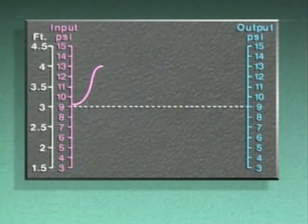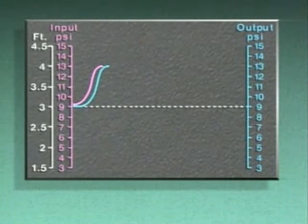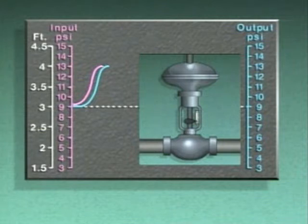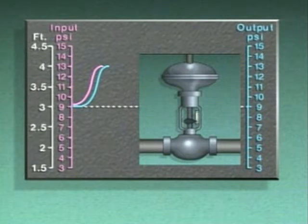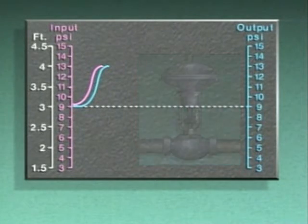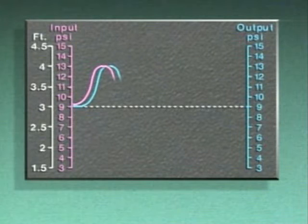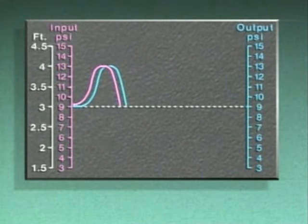In this case, it increased to 13 PSI. The output signal caused the control valve to close, decreasing the supply of water to the tank. As the level in the tank fell, the input and output signals decreased accordingly.